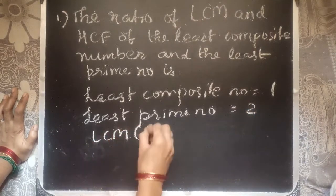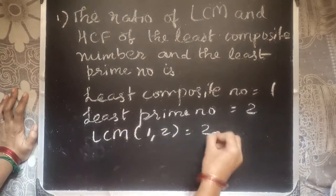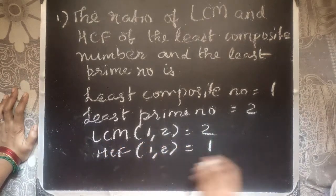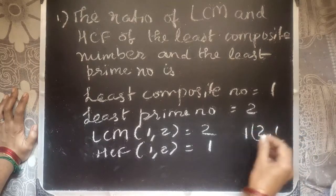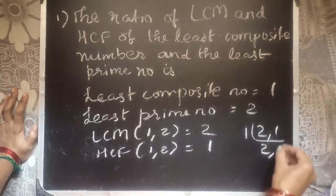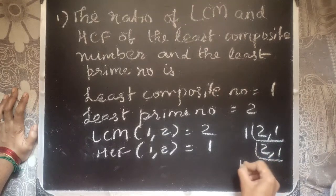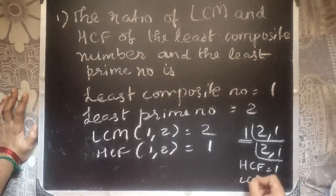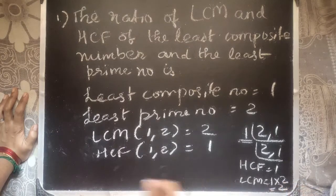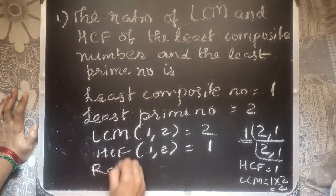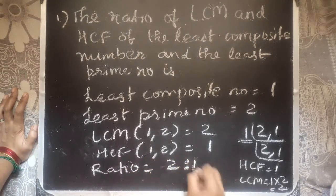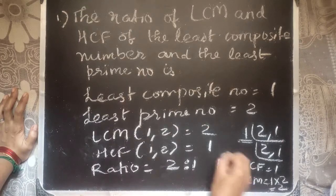The LCM of 4 and 2 will be 4, and the HCF of 4 and 2 is 2, because when we do the prime factorization the common factor is 2. So HCF is equal to 2 and LCM is 4. The ratio of LCM to HCF is 4 by 2, which is 2 to 1. So option B is the correct answer.